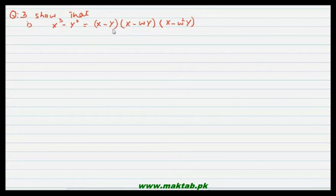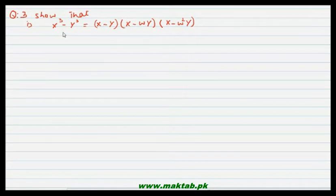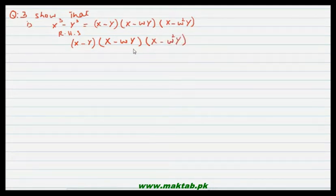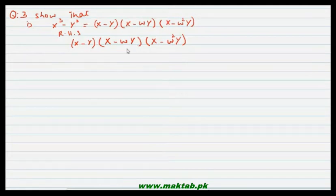Right hand side ko humne left hand side ke equal show karna hai. Is tarah ke questions mein hum right hand side ko lenge aur usko solve karke left hand side ke equal le ke aayenge. So, taking right hand side: x minus y into x minus omega y into x minus omega square y. Jo terms jinmein omega aur omega square hoga unko aapas mein multiply karenge.